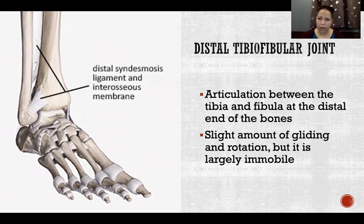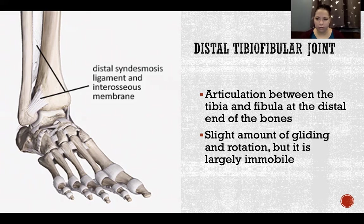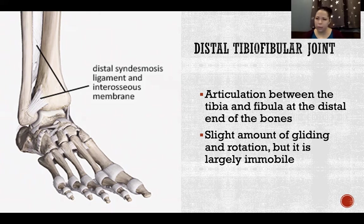The distal tibiofibular joint is amphiarthrotic — it is not diarthrotic because it's not a synovial joint. The proximal tibiofibular joint is synovial and is inside the joint capsule shared by the whole knee complex. The distal tibiofibular joint is a syndesmotic joint; it is not synovial, so it is not freely movable. It just offers a little bit of movement and is amphiarthrotic.